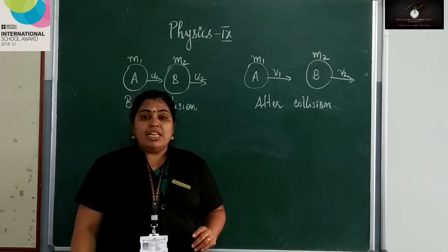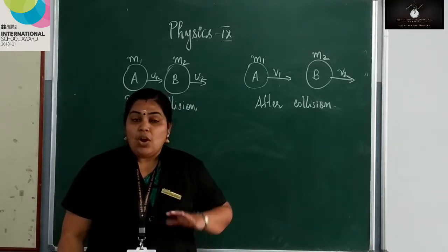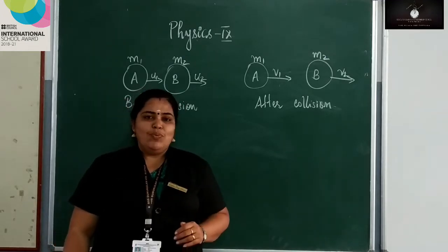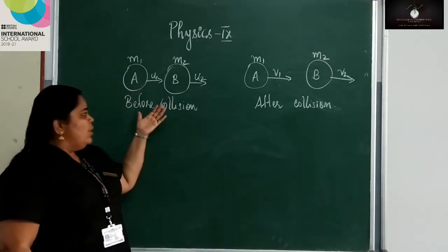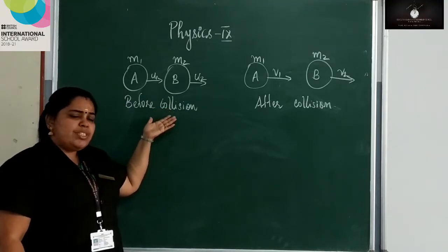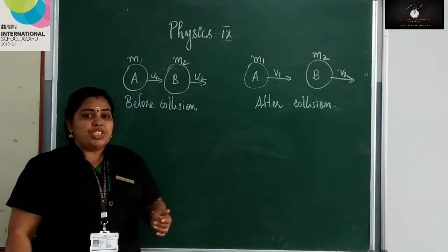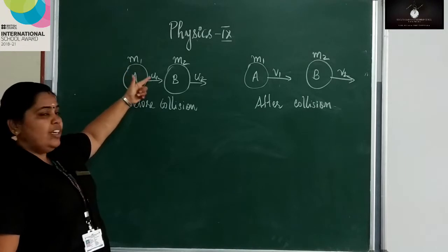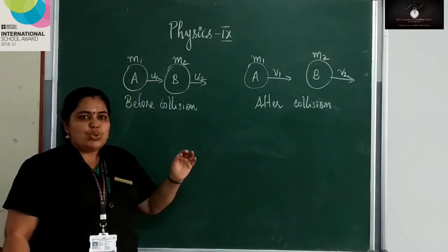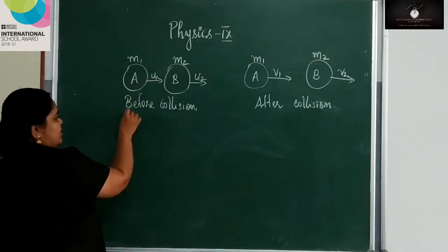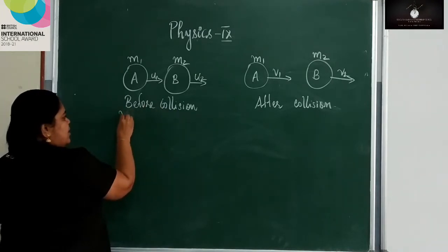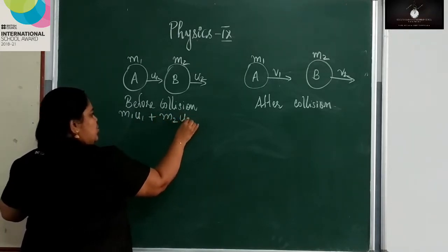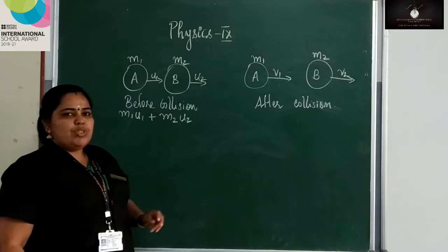We have already studied about momentum. What is the formula for calculating momentum? Momentum is equal to mass into velocity. Look at these two objects. The momentum of A before collision is m1u1 and the momentum of B is m2u2. So the total momentum before collision is m1u1 plus m2u2.